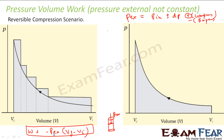Since P_external can't be constant — it keeps changing — I apply one value of P_external, then drop it and apply another, keep decreasing P_external to make sure it stays almost in equilibrium with P_internal. I get one (V_f − V_i) contribution, then another, and if I add all these I get the total work done for the equilibrium scenario.